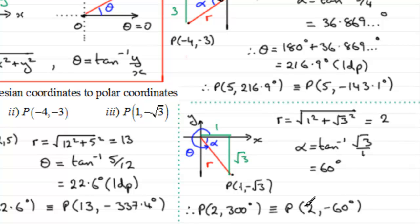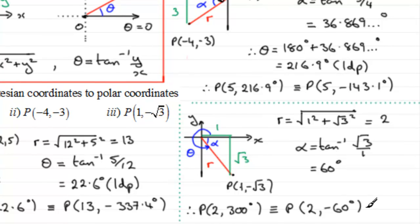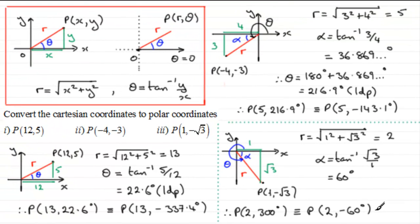So P can be written as (2, 300°) or (2, −60°). I hope that gives you a good idea of how we can represent a point in polar coordinates and the different ways we can express the angle — that was really the main point behind this video, just getting you used to that idea.